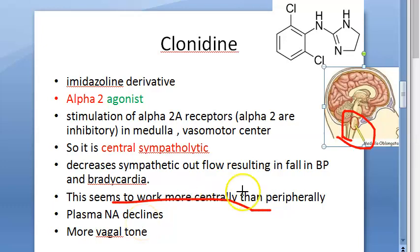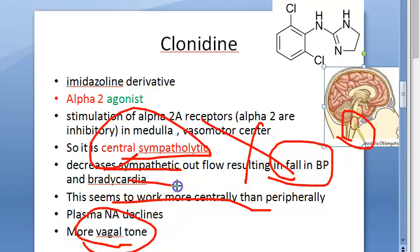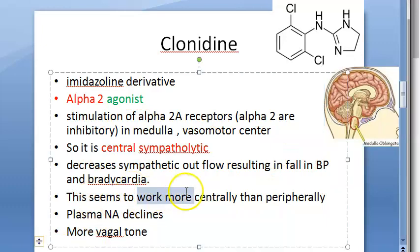Clonidine has more central action than peripheral action — that is what you have to remember. Being a central sympatholytic, it results in decreased sympathetic outflow and more vagal tone, meaning more parasympathetic tone. This leads to a fall in blood pressure and bradycardia. Because it works only centrally, there is no need to focus on peripheral receptor locations.